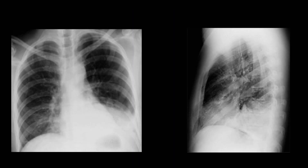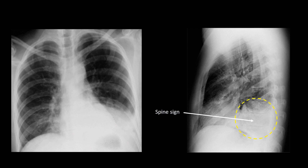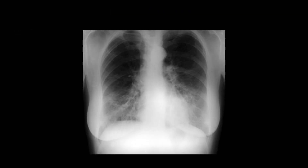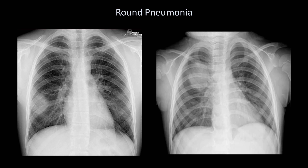In this next x-ray, there is a silhouette sign with the left diaphragm obscured. On the lateral film, there is opacification of the lower thoracic vertebrae — the spine sign — and therefore this is a left lower lobe lobar pneumonia. In another example, we see opacification in both lower lung zones. The opacifications are not as sharply defined, and there are no obvious air bronchograms — this is bronchopneumonia. Here are also two examples of the unusual round pneumonia, which can easily be mistaken for a lung mass and can only be distinguished on clinical history and resolution over days to weeks.